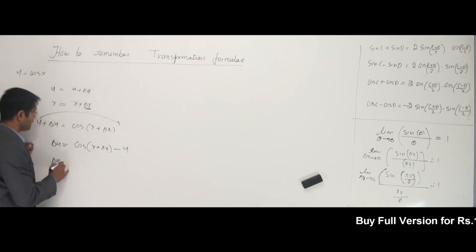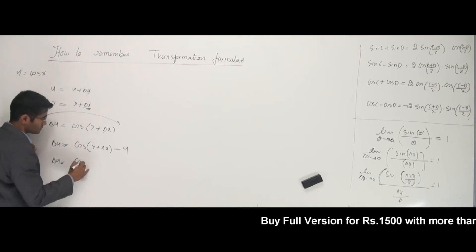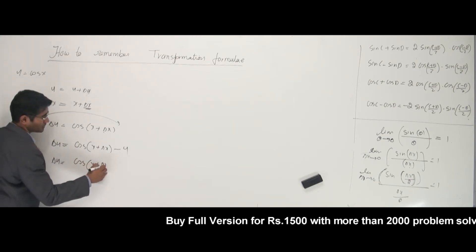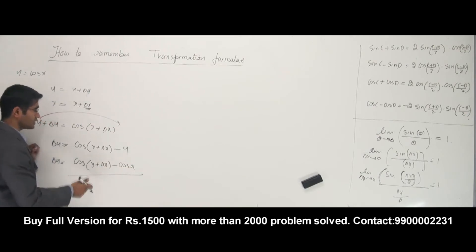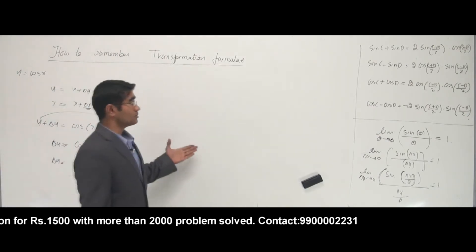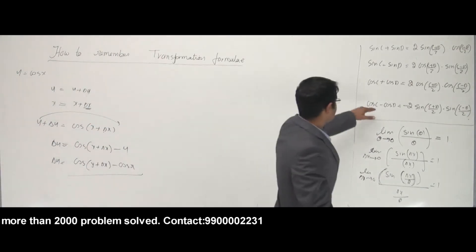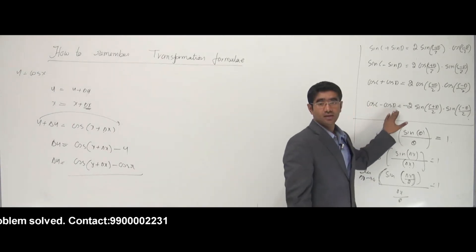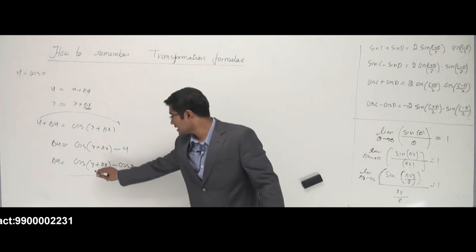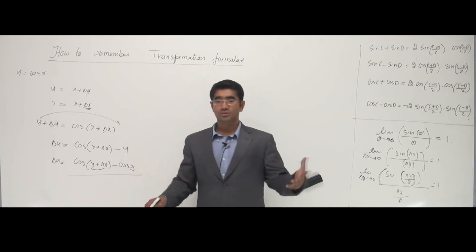Now what is y? Y is cos x, so I can write cos of x plus delta x minus cos of x. Does this look like one of the transformation formulas? We have cos C minus cos D, so this looks like one is C and the other is D.